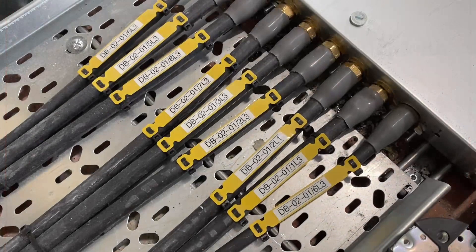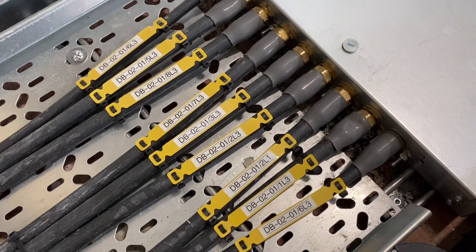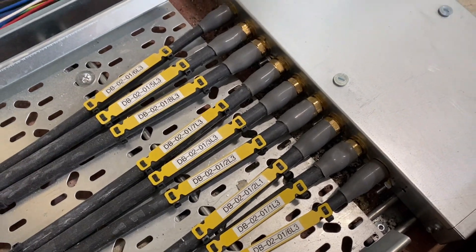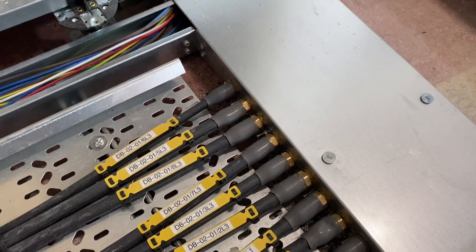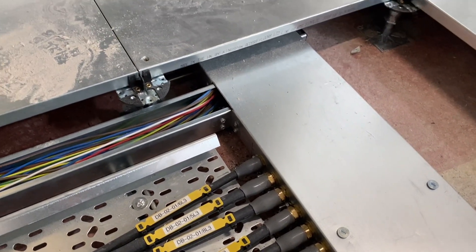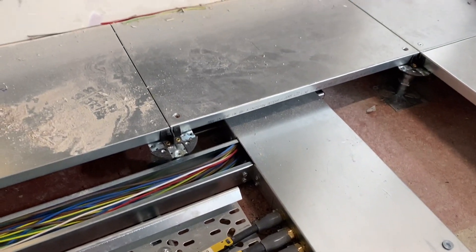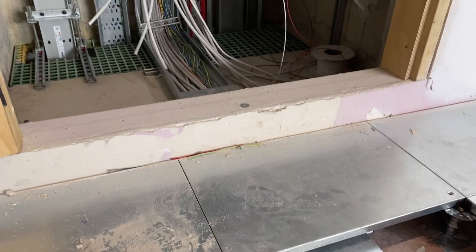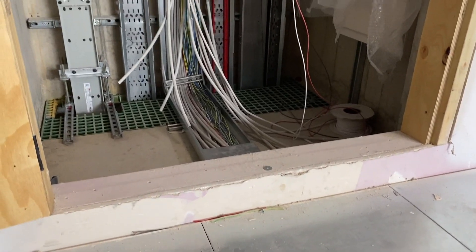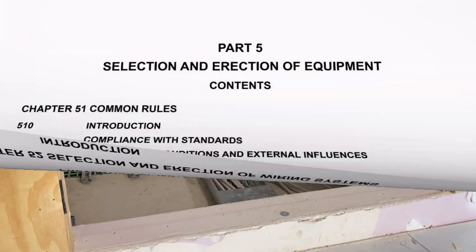Containment is the backbone of an electrical installation, carrying your conductors to where they need to be and keeping them safe from harm. But it can only do that if it's capable of withstanding the environment that it's installed into.